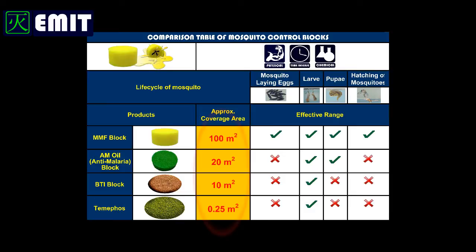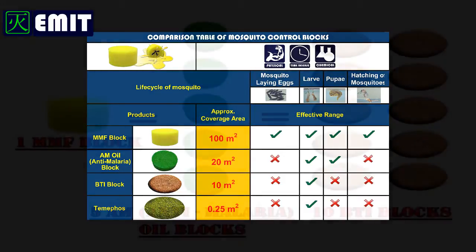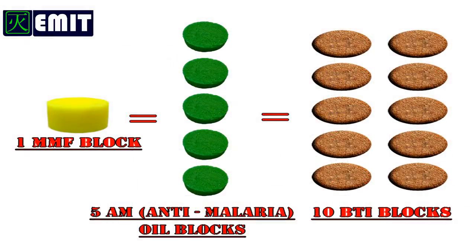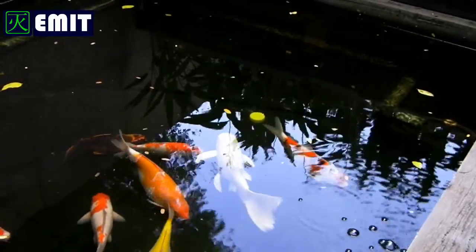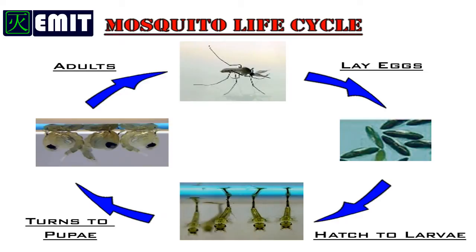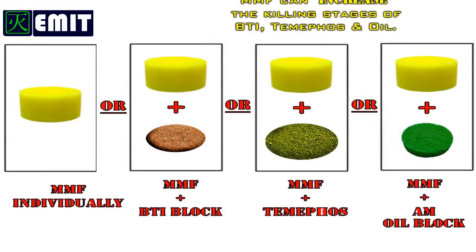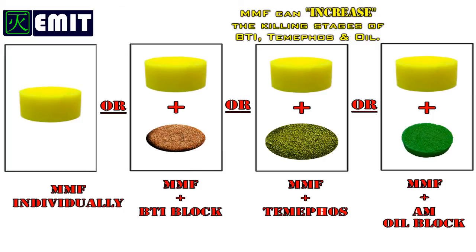In addition, MMF blocks offer five times more coverage than oil blocks and ten times more coverage than BTI blocks. It is also non-toxic to fish and humans when used according to label directions. MMF can control all stages of the mosquito life cycle and can be used singly or together with BTI, temaphose, or oil to achieve more effective control.